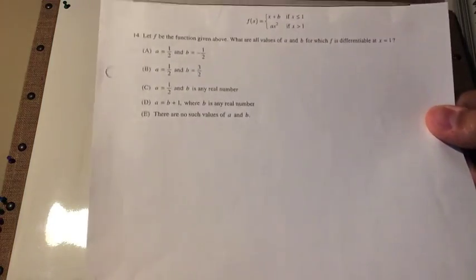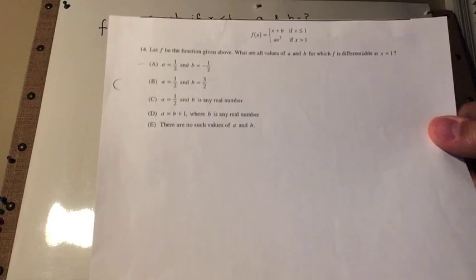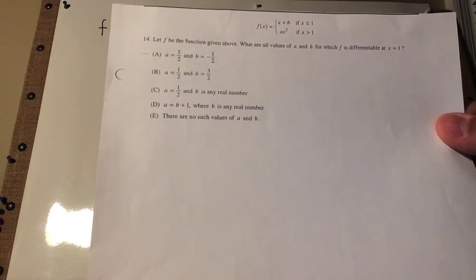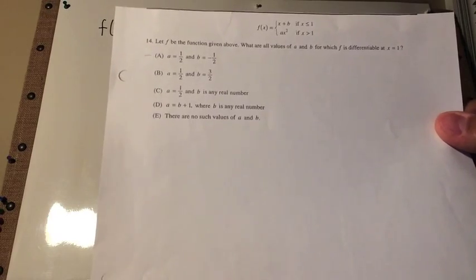So here's the problem right here. Let f be the function given above. What are all values of a and b for which f is differentiable at x equals 1?